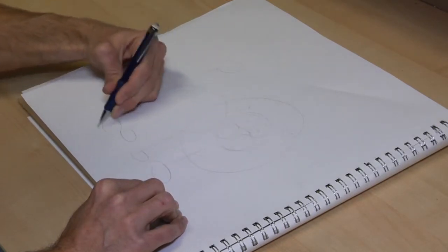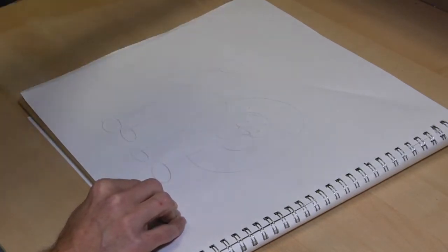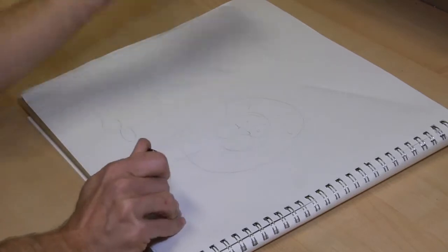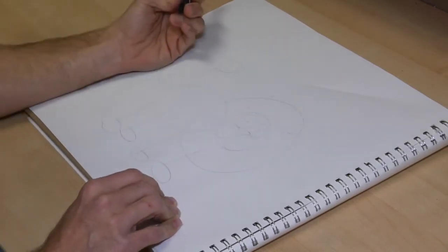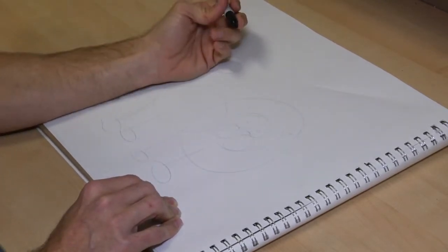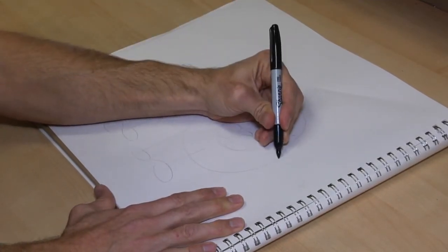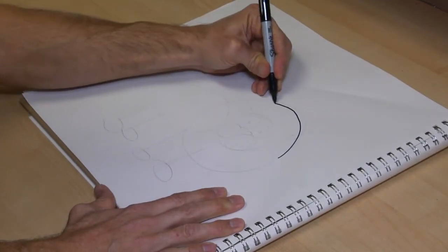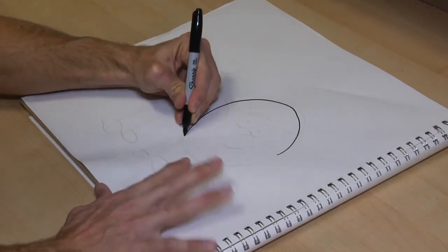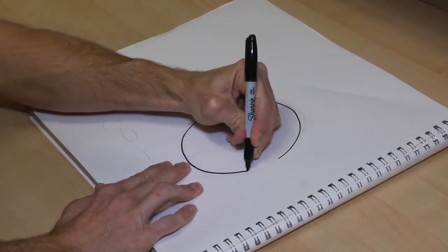But it also lends itself to a very simplified drawing. So here we go with the dark line art. I'm using a Sharpie, which is a very bold line. Again, we're going to keep our details to a minimum because we are dealing with a bolder line.